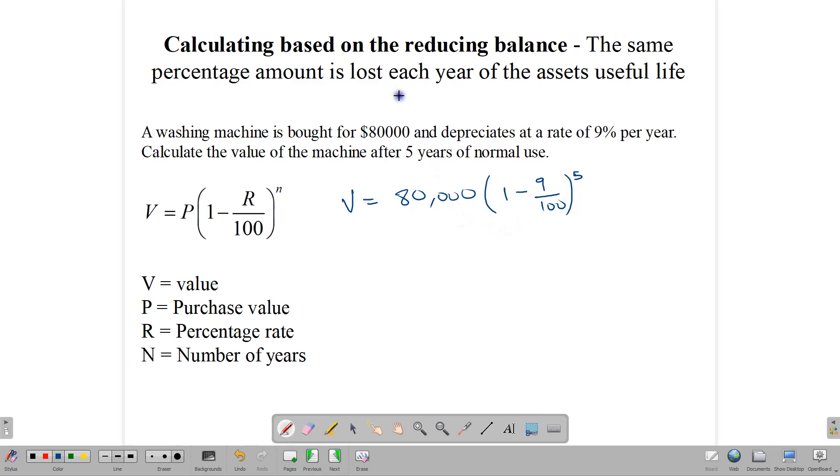So in this method, remember the same percentage is being lost each year, not the same amount of money, but the same percentage. So every year it's going down by 9%, based on reducing balance. So we have $80,000 multiplied by one minus 9 over 100, which is 0.91, and we're going to raise that to the fifth power. And once you punch that into your calculator, you're going to get $49,922.57 rounded off. So this would be the value after five years.